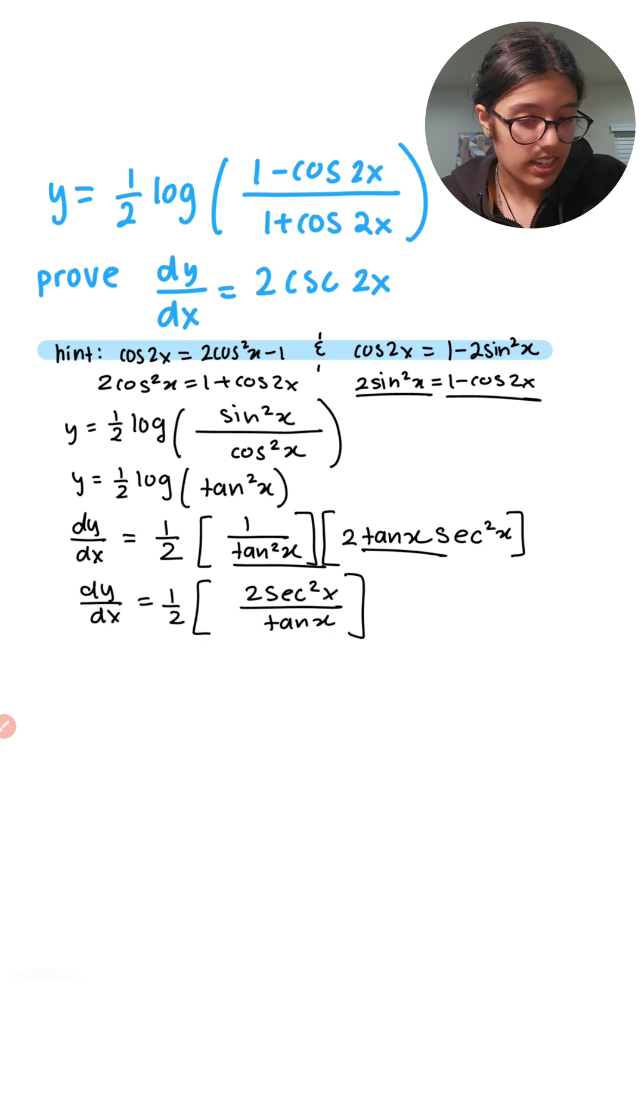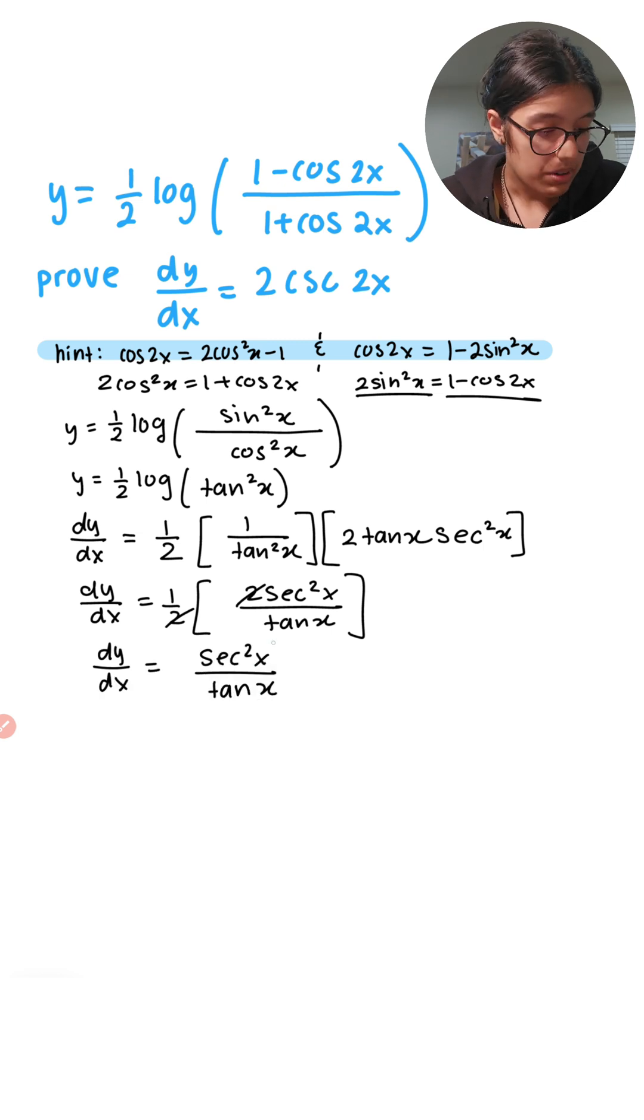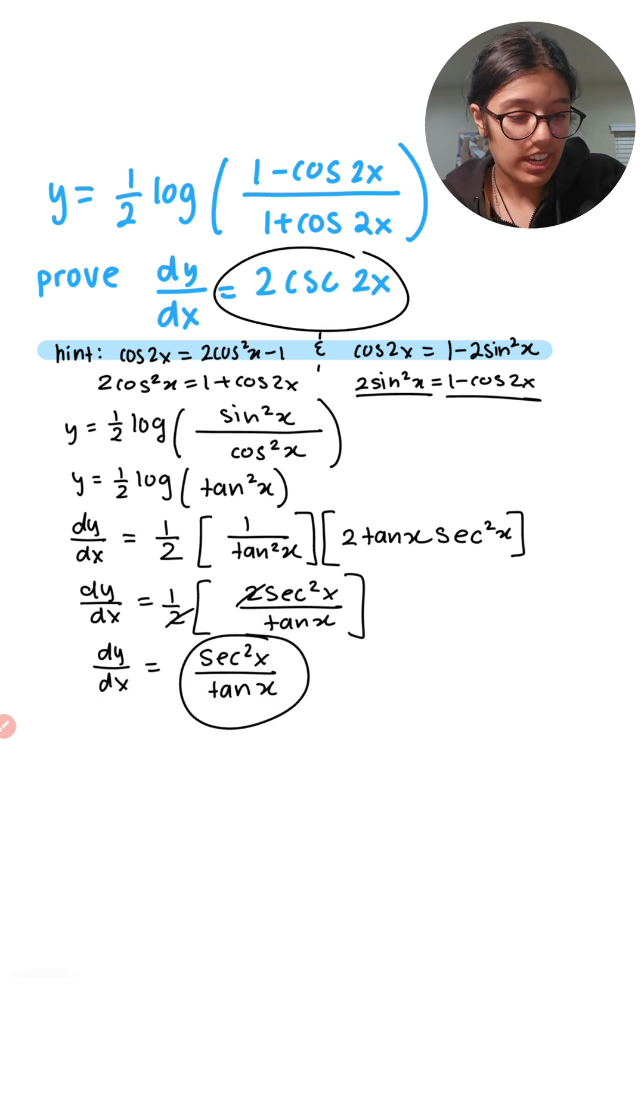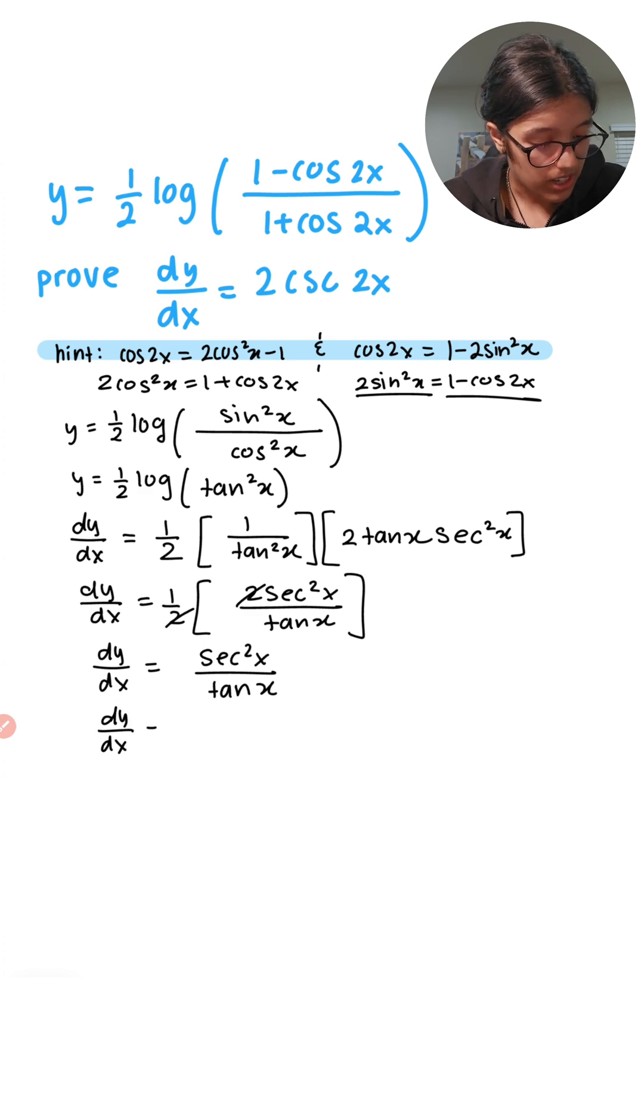So the tan x and the tan x, one tan x gets cancelled. There's a tan x left at the bottom. We know this 2 and this 2 can cancel, but this isn't our final answer. That's not what we're trying to prove. We're trying to prove that the derivative is 2 cosecant 2x, not this, so we have to simplify it a bit more. I know that secant squared x is 1 over cos squared x, and that tan x is just sin x over cos x.